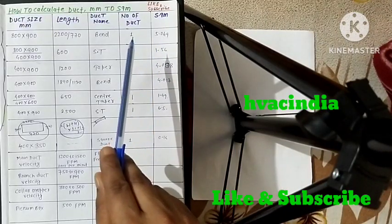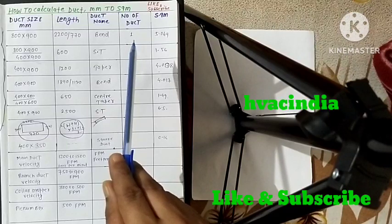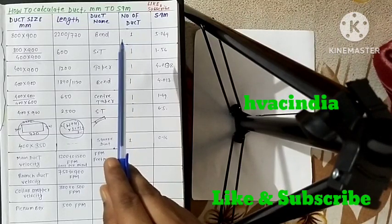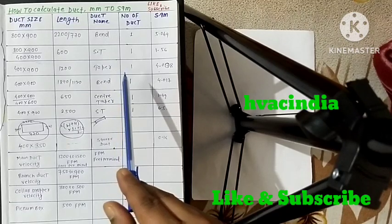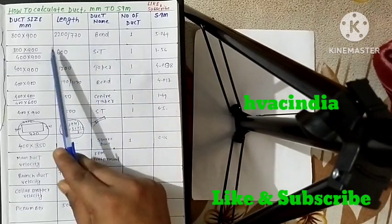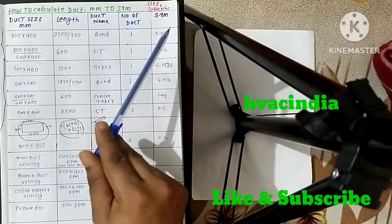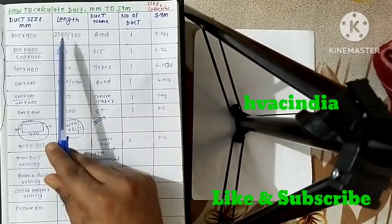So when you have a formula for the bend, the simple formula is 2 into h plus w into l1 plus l2 by 2. When you have this value, you will see l1 plus l2.